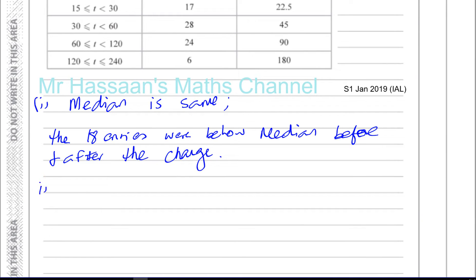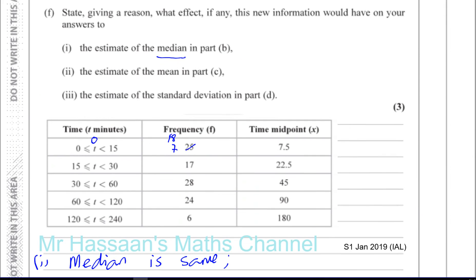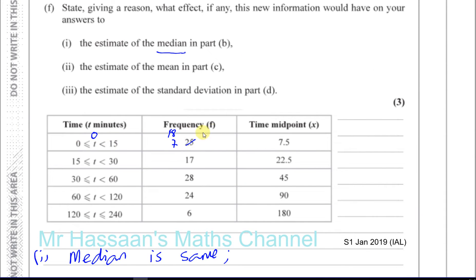Part two, the mean. What happens to the mean? Now, what is the mean again? If you remember, it's the sum of all the entries divided by the sum of all the number of people in the survey. So there's still 100 people in the survey because these 18 people are still being surveyed. It's just that their times were zero.